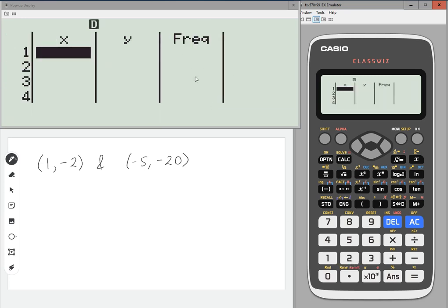Don't worry if you don't have a frequency column here. We're not going to need it. We're just going to type in the x value, one, and then the y value is minus two. Press equals after each one, then maneuver using the cursor keys.